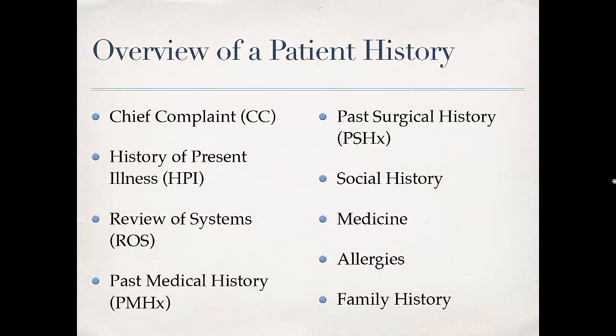So, overview of a patient history. Every time you walk into a patient room, especially if it's a new patient, you're going to go through all of these things: you're going to look for the chief complaint, get a history of present illness (aka an HPI), ask about a review of systems, get the past medical history, the surgical history, their social history, what medicines they're on, new medicines, allergies, and family histories.